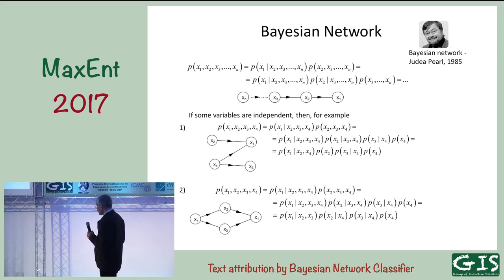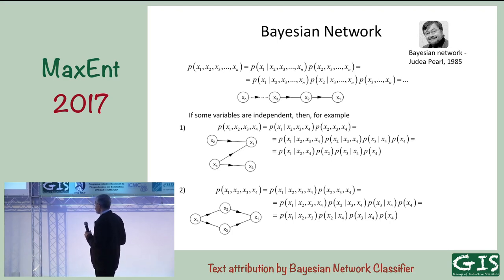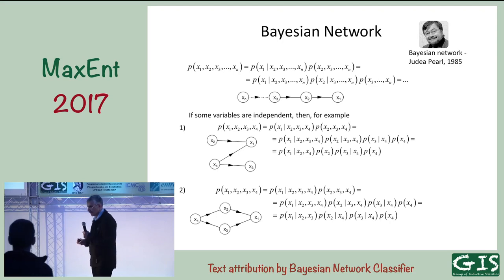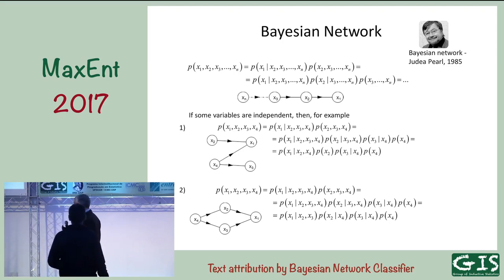What is interesting here? If you have some independencies — for example, if I take this example, and I assume that X2 is independent of X3 and X4, and X3 depends only on X2, and X2 is independent of everybody else — then it will be presented as a simpler graph, and I will have a simpler probability table for every node to encode the same joint probability distribution. In a very general way, every network could be presented like this.